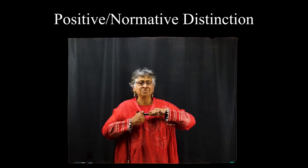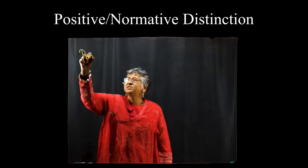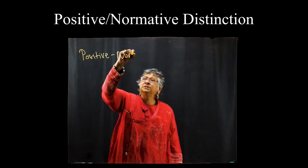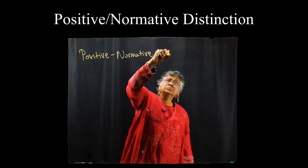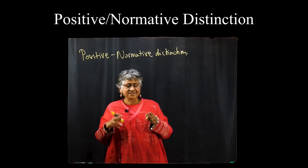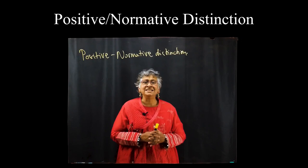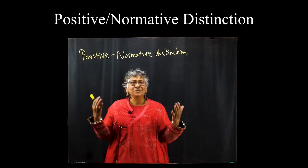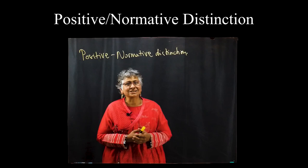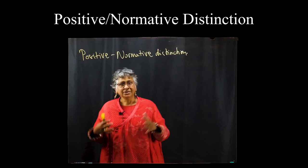In order to understand this, we are going to start with a very famous distinction in economics called the Positive-Normative Distinction. This distinction — in case you are interested in the history — was put forward by John Neville Keynes, a very famous political economist, even though we mostly remember his son, John Maynard Keynes, who was the architect and founder of what we will know as macroeconomics.